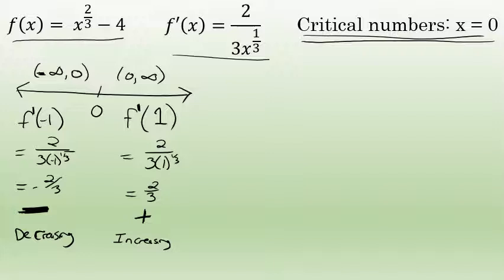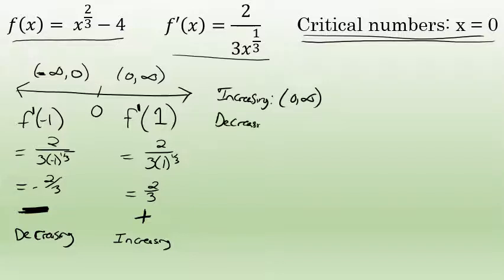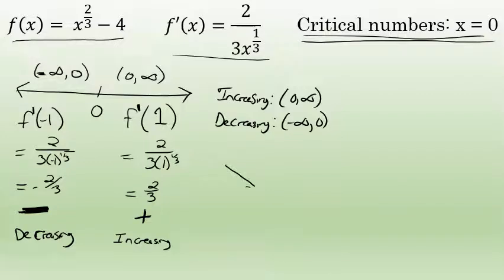To summarize: this function is increasing over the interval from zero to infinity, and this function's graph is decreasing over the interval from negative infinity to zero. So what's happening is that the function from negative infinity to zero is going down, and then when the graph arrives at x = 0 it begins increasing from zero to infinity.